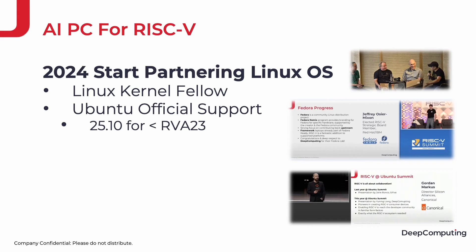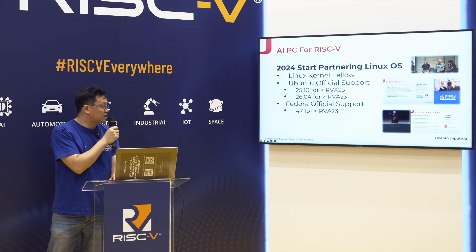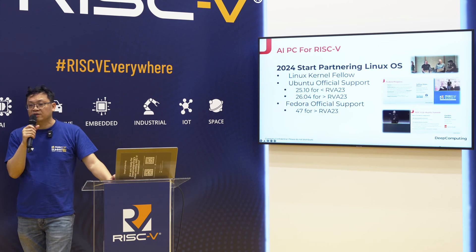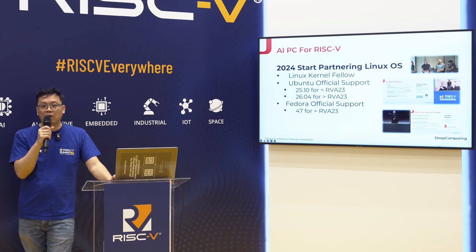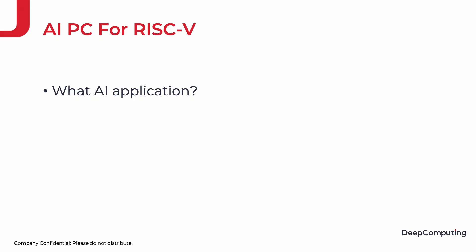For RVA23, Ubuntu can support all the way to 2025-10, and from 24-04 onward they only support RVA23. So let's wait for RISC-V RVA23 chipsets. On Fedora, same thing — they only support RVA23, and it's pending for RISC-V server support to get Red Hat to build the Fedora image.